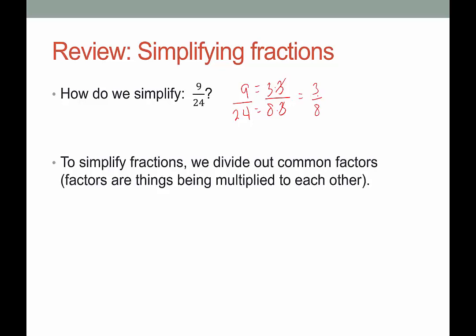To simplify fractions, we divide out common factors. And factors are things that are being multiplied to each other. So 3 times 3 — the factors are 3 and 3. 8 times 3 — the factors are 8 and 3. We're going to keep that in mind as we look at simplifying factorials.